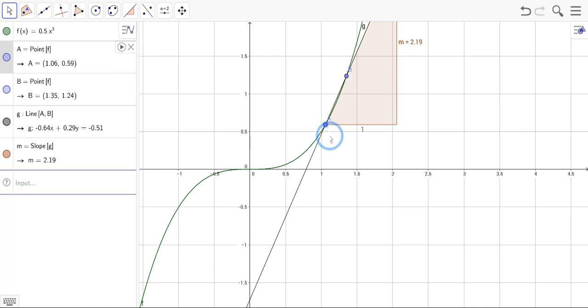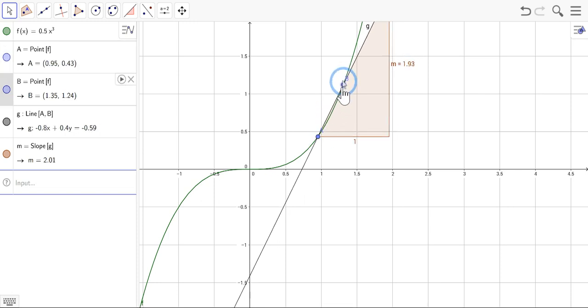Again, let's say we want to estimate the instantaneous rate of change when x equals 1. So I'll drag my point A very close to 1, I'll drag my point B very close to 1. And you'll see that we're closing in. It's 1.47. Remember, we think it's 1.5. So we can do exactly the same thing here that we did with Desmos earlier in the video. It's almost identical. It's just a little bit different in terms of exactly how you do it.